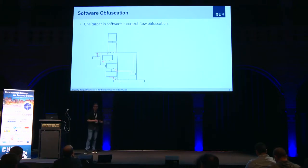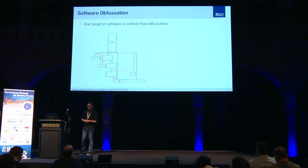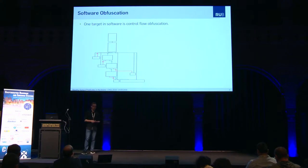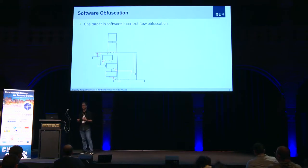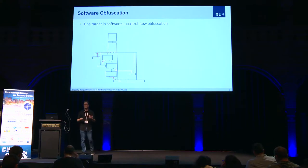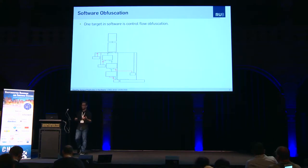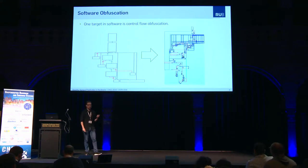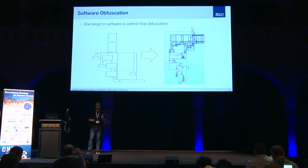So before we go to hardware obfuscation, let's take a look at software obfuscation first. One target in software obfuscation is control flow obfuscation. Here you can see a control flow graph which basically visualizes the branches software takes. You have all your basic blocks connected by branches, and you can visualize the branching behavior with a control flow graph. And if you now obfuscate the control flow in software, you may get a control flow graph like this, which is now much more difficult to analyze, even for a human being.